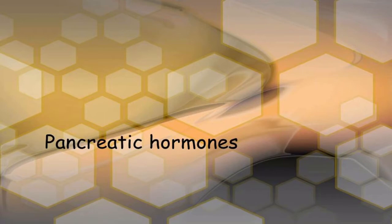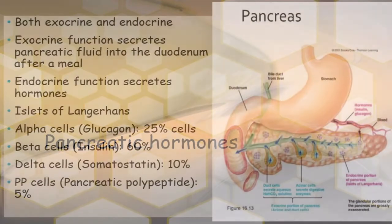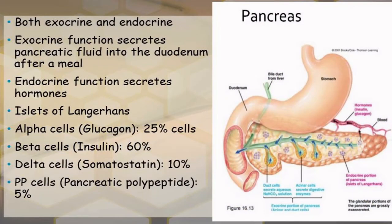Welcome to the next session on pancreatic hormones. The pancreas is situated right below the stomach and has a duct that enters into the small intestine, particularly at the duodenum. The pancreas is unique in that it has both exocrine and endocrine functions. The exocrine function involves secreting pancreatic fluid into the duodenum after a meal, whereas the endocrine function involves secreting hormones.